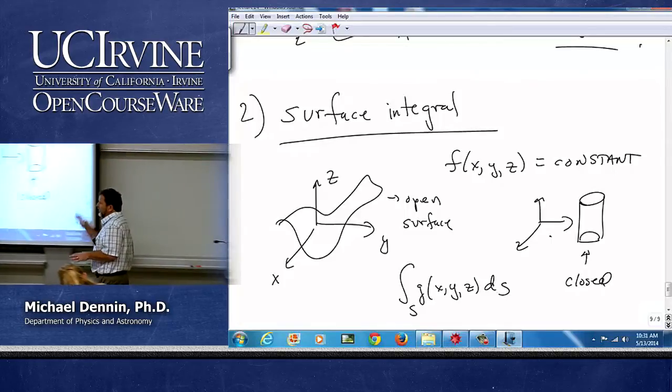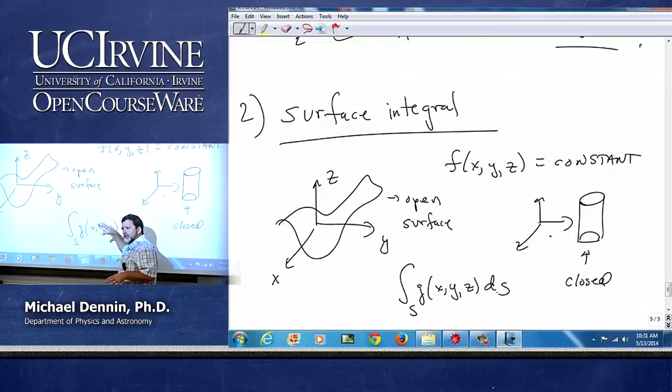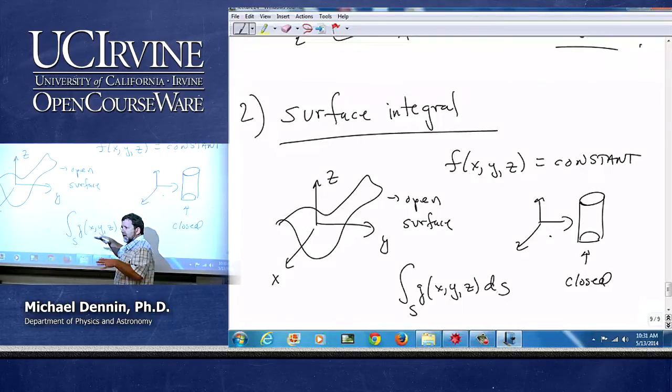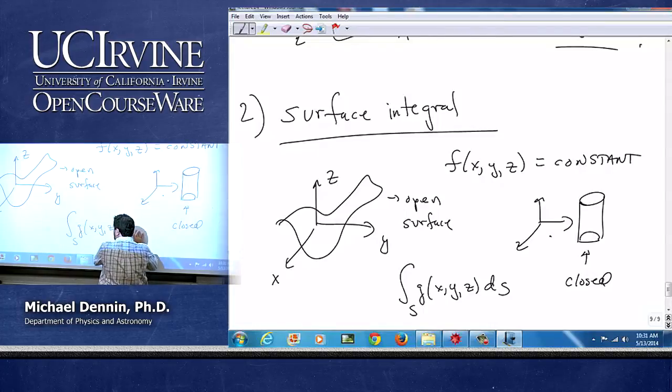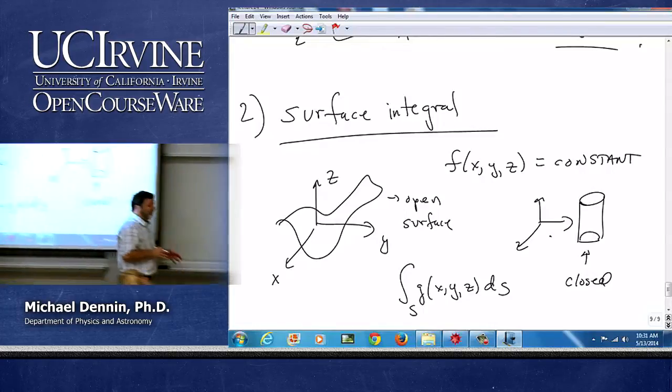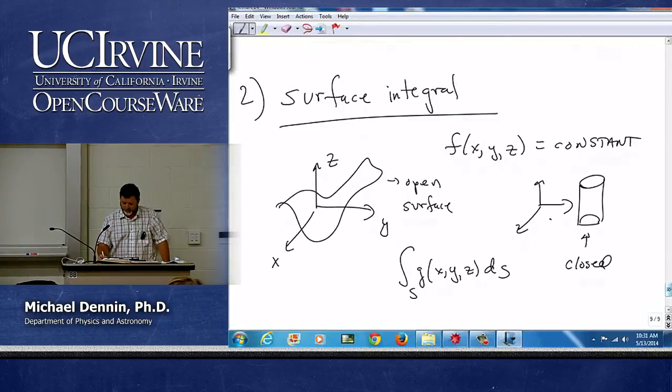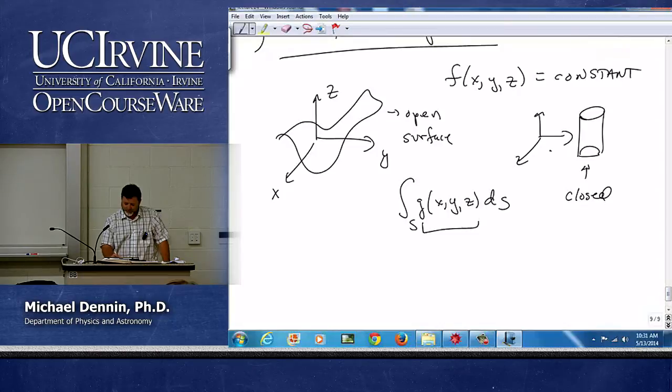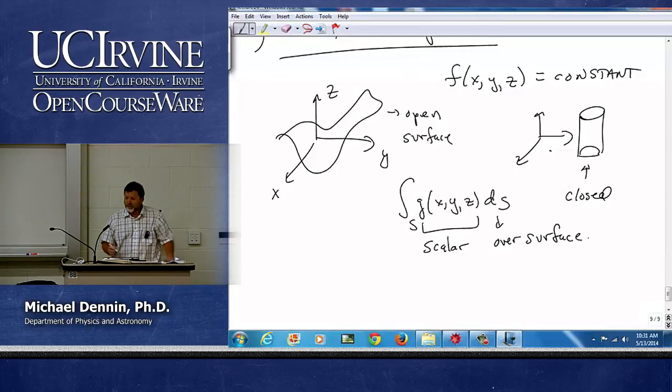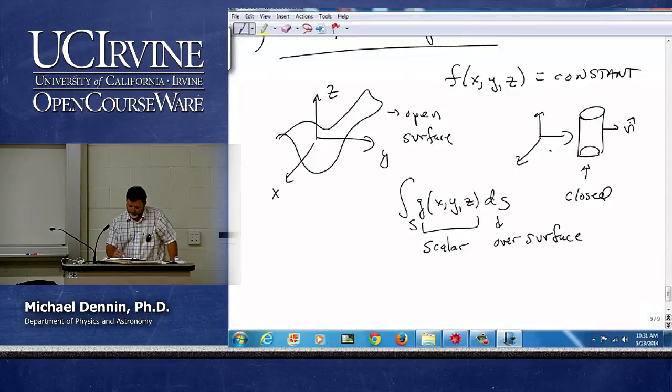And so the area I did before, summing over a little bit of an area, is kind of a special case of that. That's where our surface is a plane in the xy plane. But here I can take any surface, and now I have the same features that I had with my line integral. I can do the scalar over the surface. Or if you keep in mind that areas can be vectors, right? They have a normal to them.